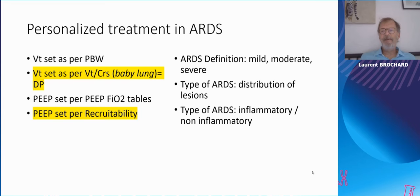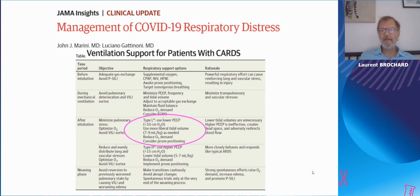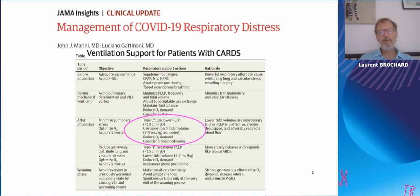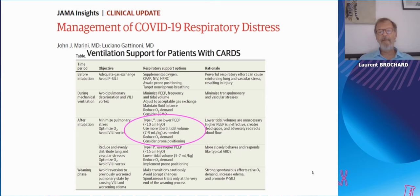I'll also discuss moving from the PEEP-FIO2 tables to individual titration of PEEP based on lung recruitability, and then the classification of patients as sub-phenotypes. We're all aware of the COVID respiratory distress syndrome and the recommendation by John Marini and Luciano Gattinoni: if a patient is more of the type L — L for low elastance, meaning high compliance — you should, even if the patient meets the definition of ARDS, use a more liberal tidal volume of 7 to 9 ml per kilogram. This is a big change, and although it could make sense, we may not have enough data to say it is safe.